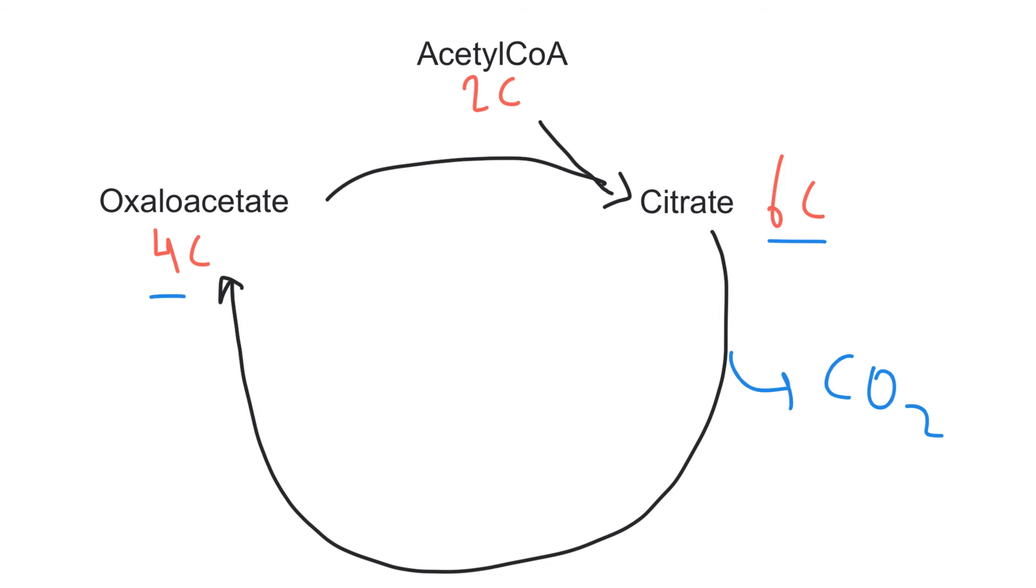So two carbon dioxide molecules are lost. Krebs cycle also results with three reduced NAD. Reduced NAD. Again, reduced NAD. It's easier to write NADH. And one more reduced NADH.